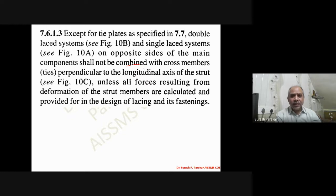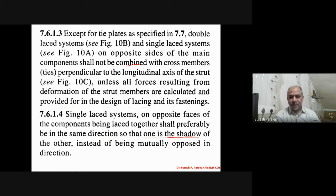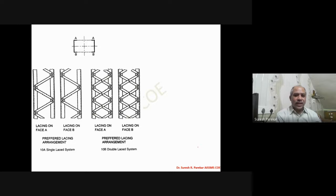Refer to the figures given in IS 800:2007 in the next slide. For the single lacing system, opposite faces of the components being laced together shall preferably be in the same direction, so that the lacing on one face is the shadow of the other, instead of being mutually opposed. So one lacing should be the shadow of the lacing on the other side.